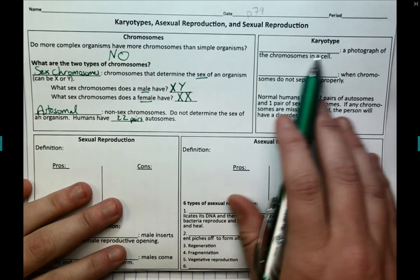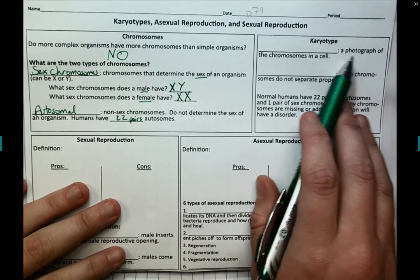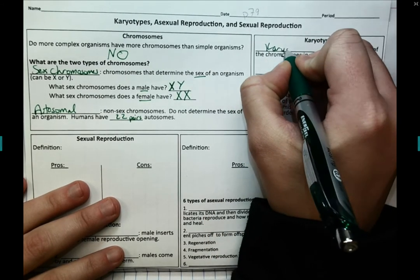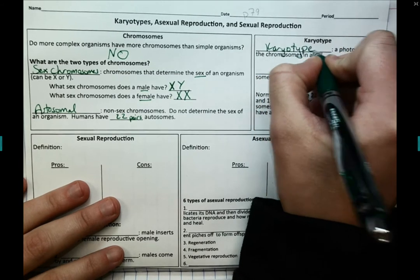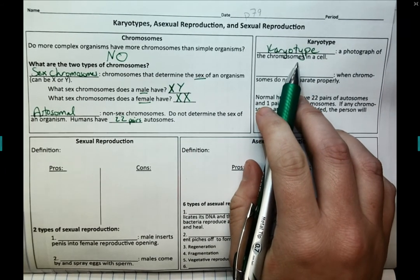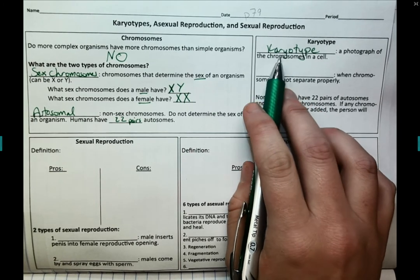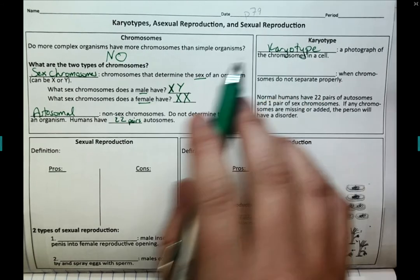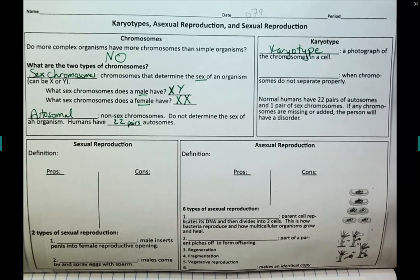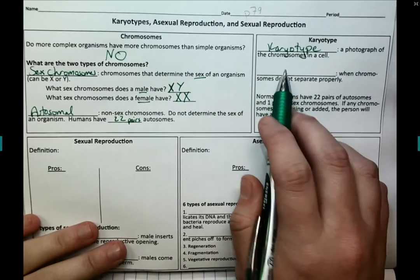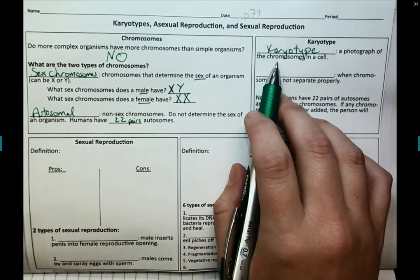A useful tool for studying chromosomes is the karyotype — a photograph of all the chromosomes in a cell. We can take a photo and look at all of the chromosomes an individual has, and use that karyotype to determine if that individual has a genetic disorder or any number of other things. We could also tell the sex of the individual.